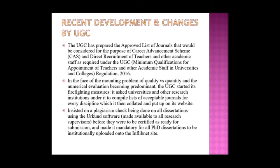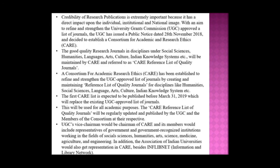In the face of mounting problems of quality versus quantity, where numerical evaluation became predominant, the UGC started firefighting measures. It asked universities and research institutions to compile lists of acceptable journals for every discipline, which it then collected and put on its website. It insisted on a plagiarism check being done on all dissertations using Urkund software, made available to all research supervisors before certification as ready for submission. It also made it mandatory for all PhD dissertations to be uploaded onto the INFLIBNET site.